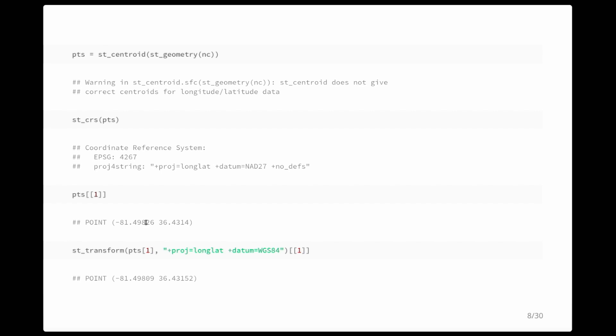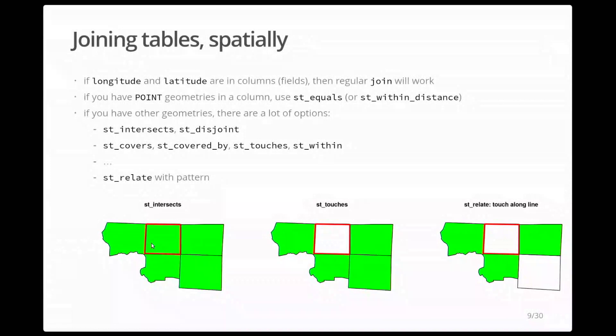The coordinates are roughly the same but at the fourth significant digit they start to change — that's somewhere around a 10-meter difference. So NAD27 and WGS84 differ that much; not massive, you wouldn't see it on a map, but if you do precision geodetic computations it's there. Another common operation with tables is joining them. If you just have longitude and latitude as plain columns you can use equality checks and continue doing your SQL as before.